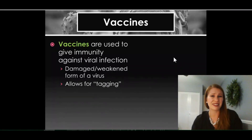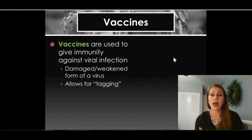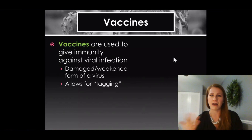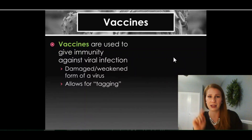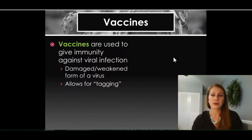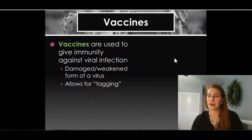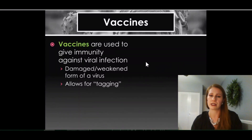When you have a weakened or damaged form of the virus in your system, it allows your immune system — the system that fights off these invaders — to tag it. It essentially says, 'Hey, this is bad, let's get rid of that any time we see it in the future.' So your body doesn't have to wonder what's happening. It just tags it and says, 'This one's to be destroyed, we don't want this in our body.'